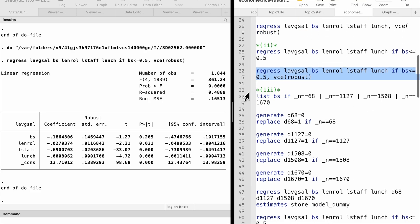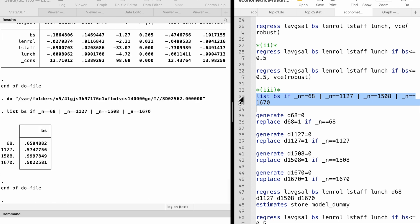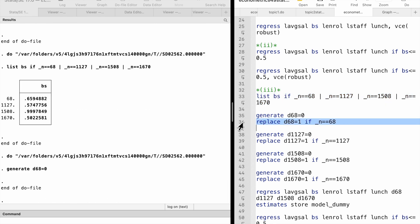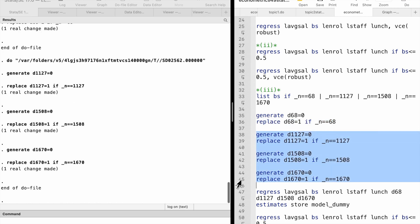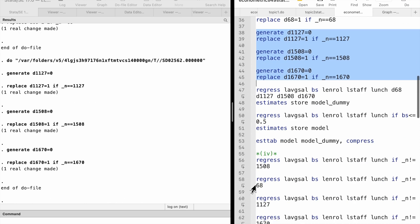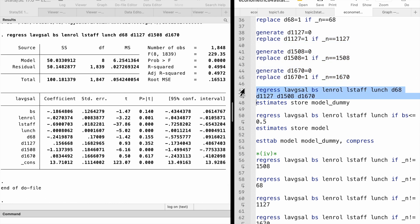For part 3, we first verify the four observations, and then add four dummy variables for the four observations with BS larger than 0.5. We can show that the coefficients on the other variables and the standard errors are the same as the model in part 2.